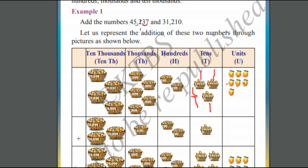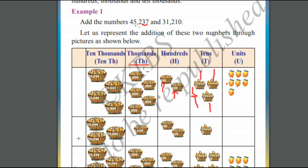Now let us move on to hundreds place. In hundreds place, we have 200 mangoes — 100 plus 100 mangoes is equal to 200 mangoes. Now let us move on to thousands place. In thousands place, we have got 5,000 mangoes: 1,000, 2,000, 3,000, 4,000, 5,000. Similarly, in the ten-thousands place, we have 40,000 mangoes.